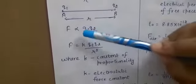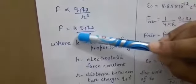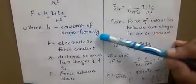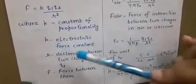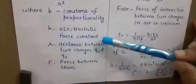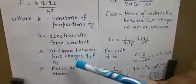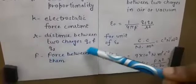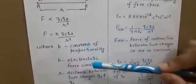When you remove the proportionality sign, you replace it by K — the symbol K — where K is the constant of proportionality and we call this the electrostatic force constant. Here R is the separation distance between charges Q1 and Q2, and F is the force between them. You can note down all these points to be clear up to this point.